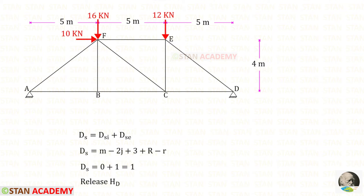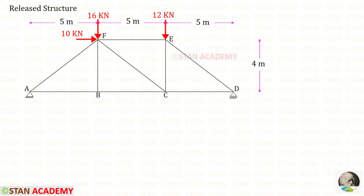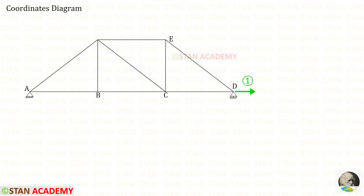We have only external degree of static indeterminacy. Out of these 4 reactions, we need to release 1 reaction. I am going to release the horizontal reaction from D, that is HD. I have released HD; previously at D we had a hinged support, now there is a roller support with only 1 vertical reaction. This structure is called the released structure. Let us draw the coordinates diagram. In this analysis there is only 1 coordinate, because we have removed only HD.